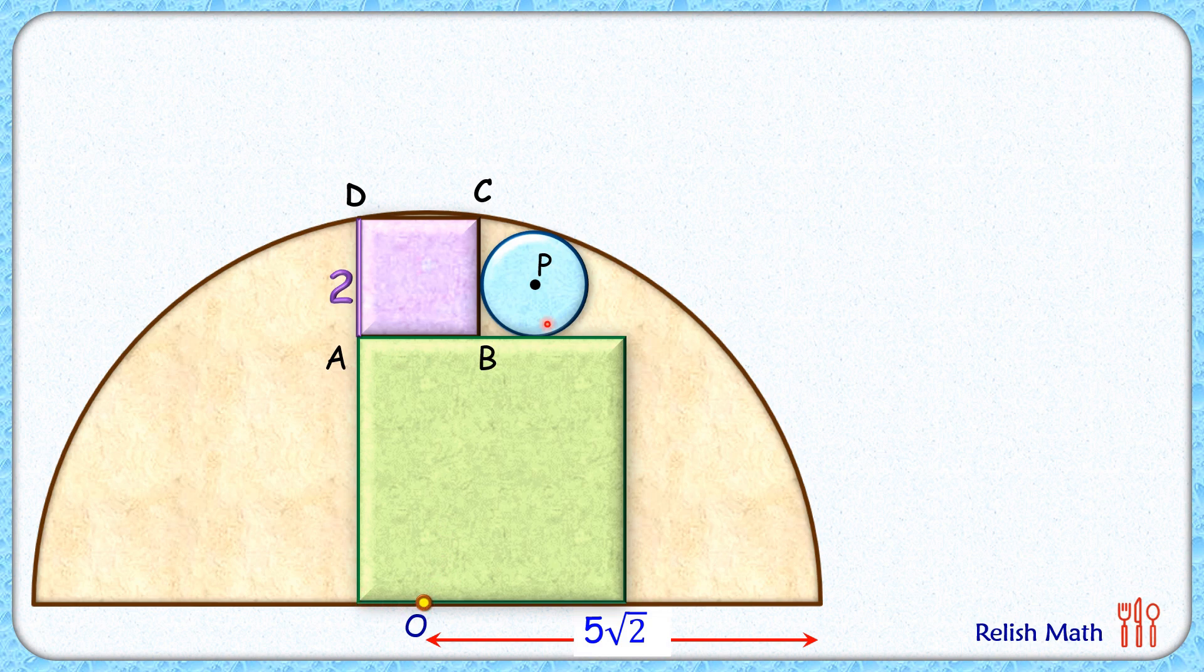Now if we check this green square, it's lying on the diameter. So here we can say that AB length, which is also tangent to the blue circle, is parallel to the diameter of this semicircle.